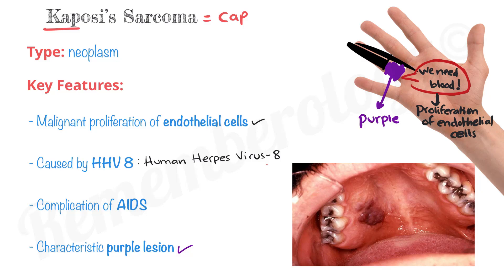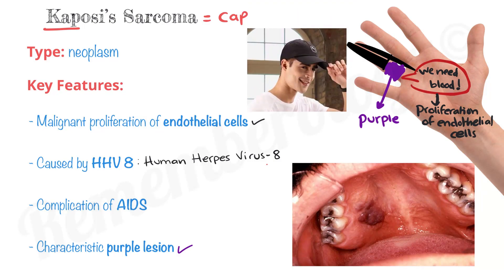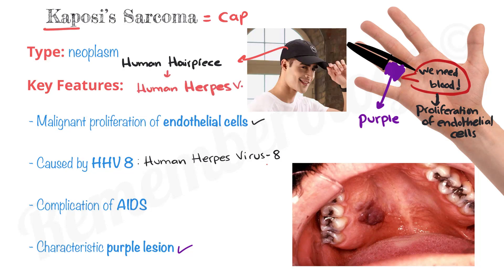Kaposi's sarcoma equals a cap — it can be a cap that you wear on your head. What is a cap? A cap is a human hairpiece, an accessory that humans wear on their hair. So remember, 'cap' stands for 'human hairpiece.' But which type of human herpesvirus is it? If we look at the cap, it divides your head into two parts, making your head look like the number 8. That's also true for the pen cap — it divides your finger in the middle and your finger looks like the number 8. So a cap is a human hairpiece that makes your head or finger look like the number 8.